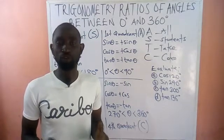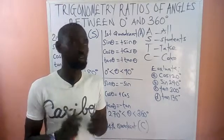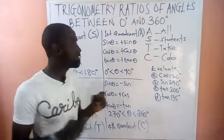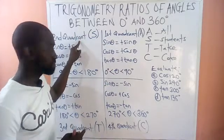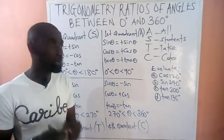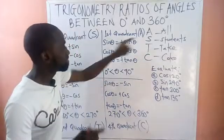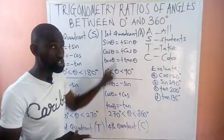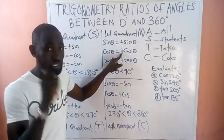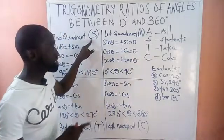How do we get the trigonometry ratios of angles between zero degrees and 360 degrees? In this video, we are going to do justice to that by using what we call the four quadrants. This is the first quadrant, this is the second quadrant, this is the third quadrant, and this is the fourth quadrant. We use an acronym called ASTC, which implies 'All Students Take Care.' In the first quadrant, all of the ratios must be positive — we must have positive sine, positive cosine, and positive tangent.